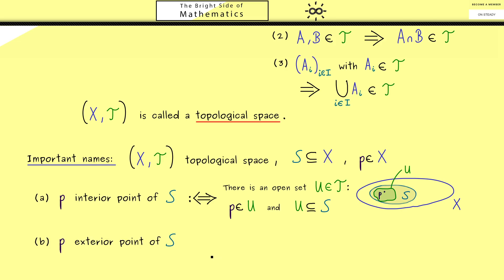So you see, the crucial thing here is that we find a suitable open set from the topology T. Now it might not surprise you: when we have interior points of S, we also have exterior points of S. Of course, the name already suggests in our picture here the point p should lie outside of S.